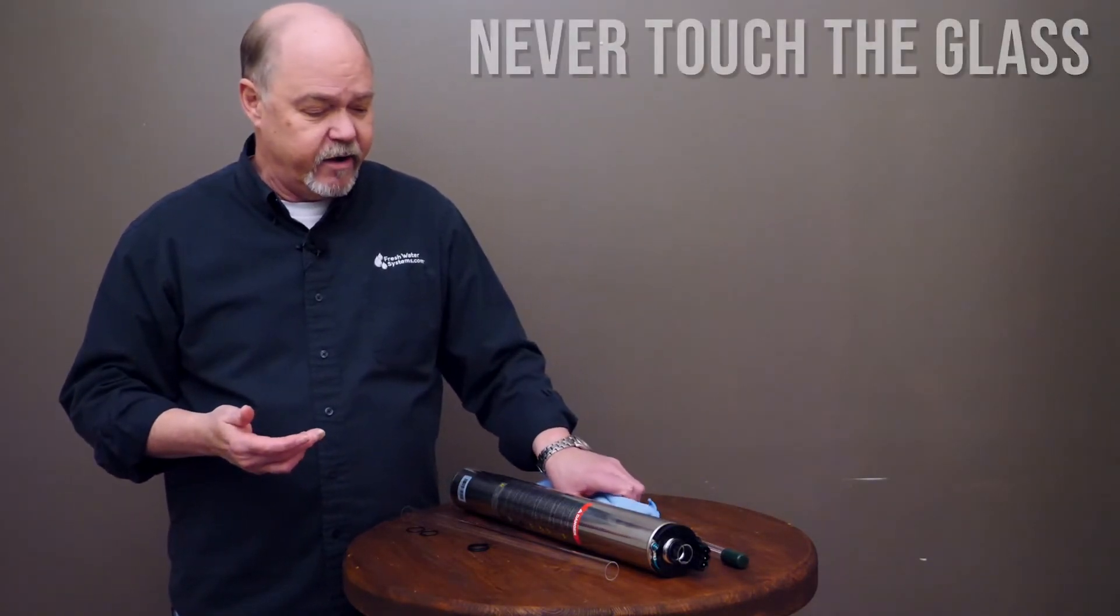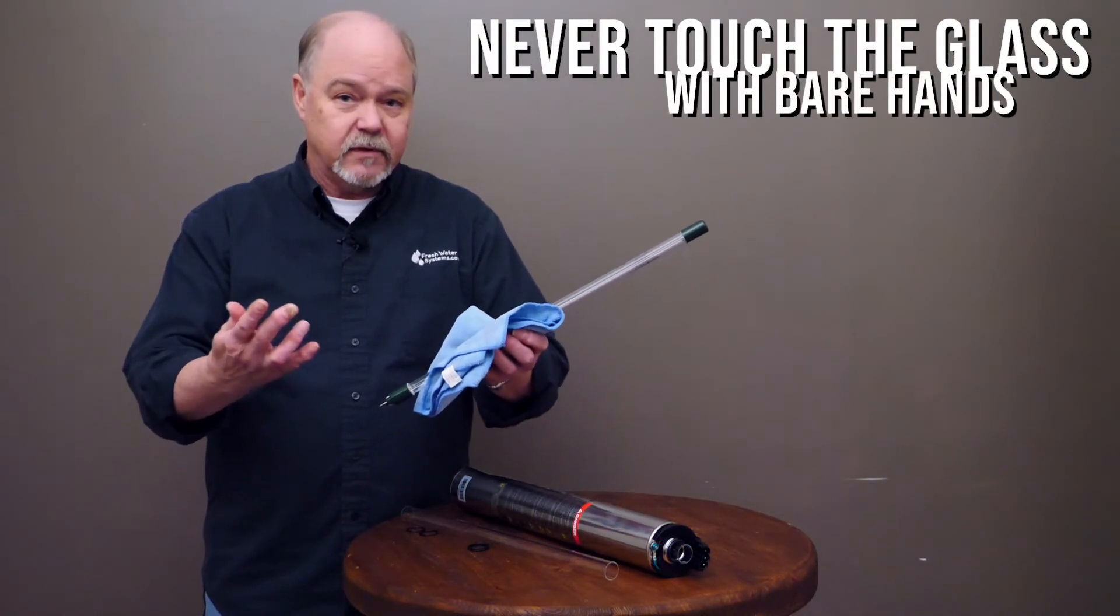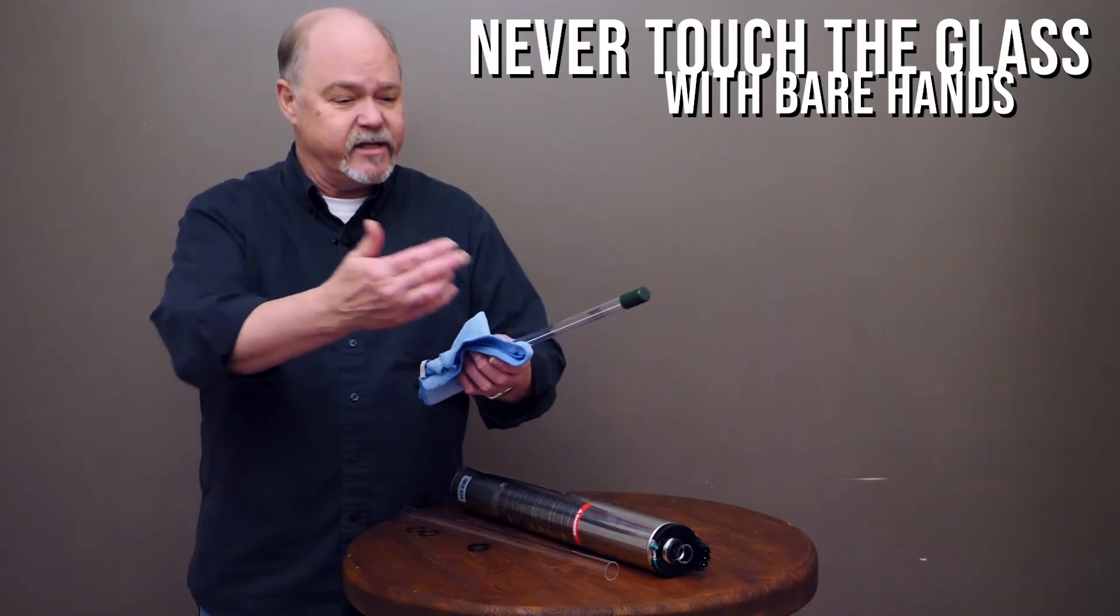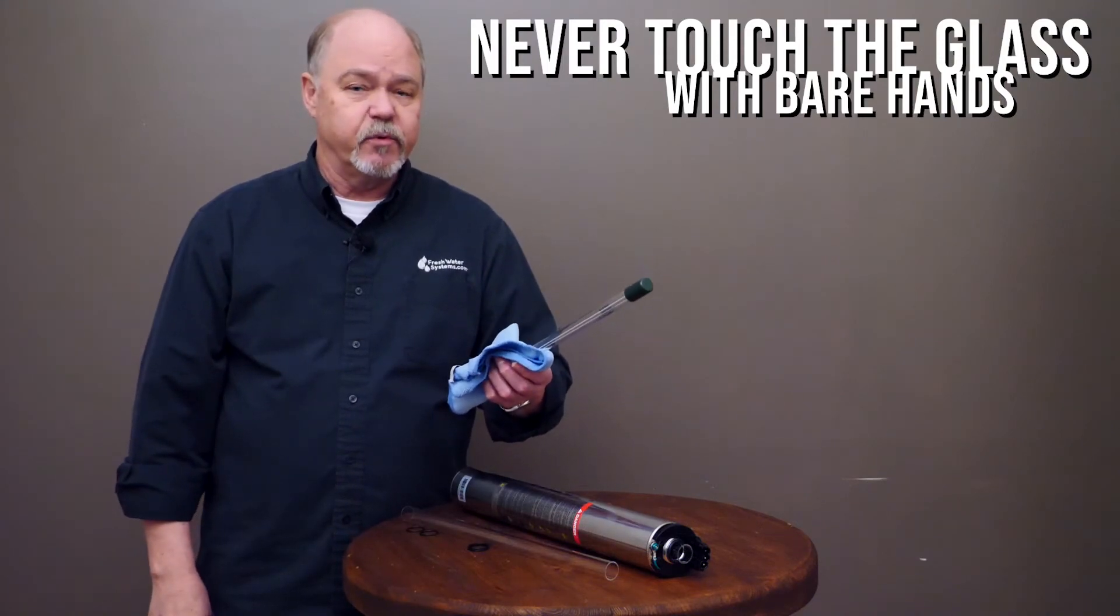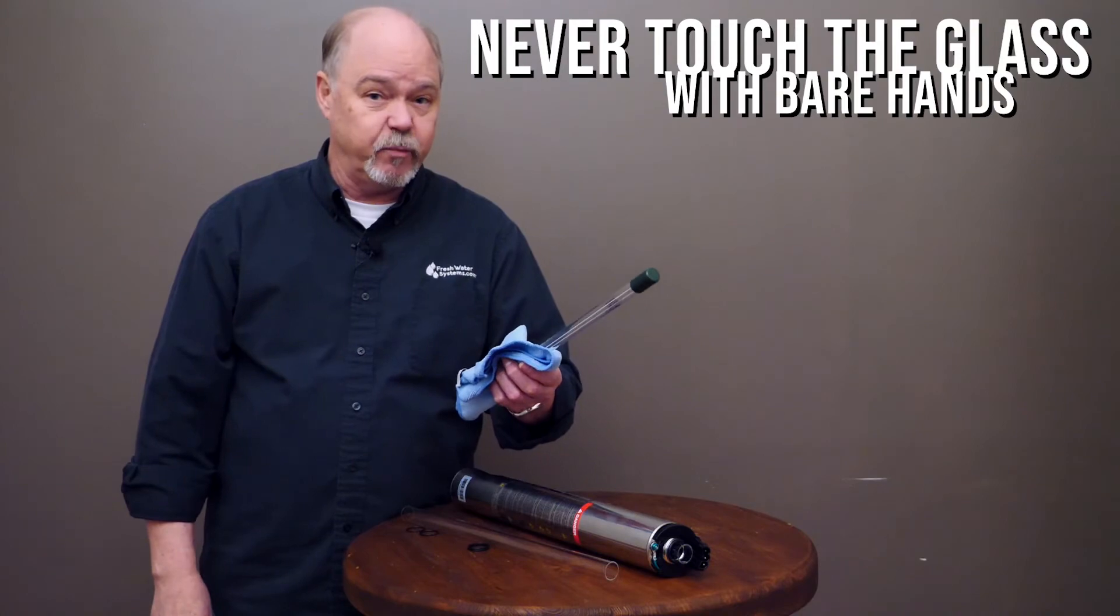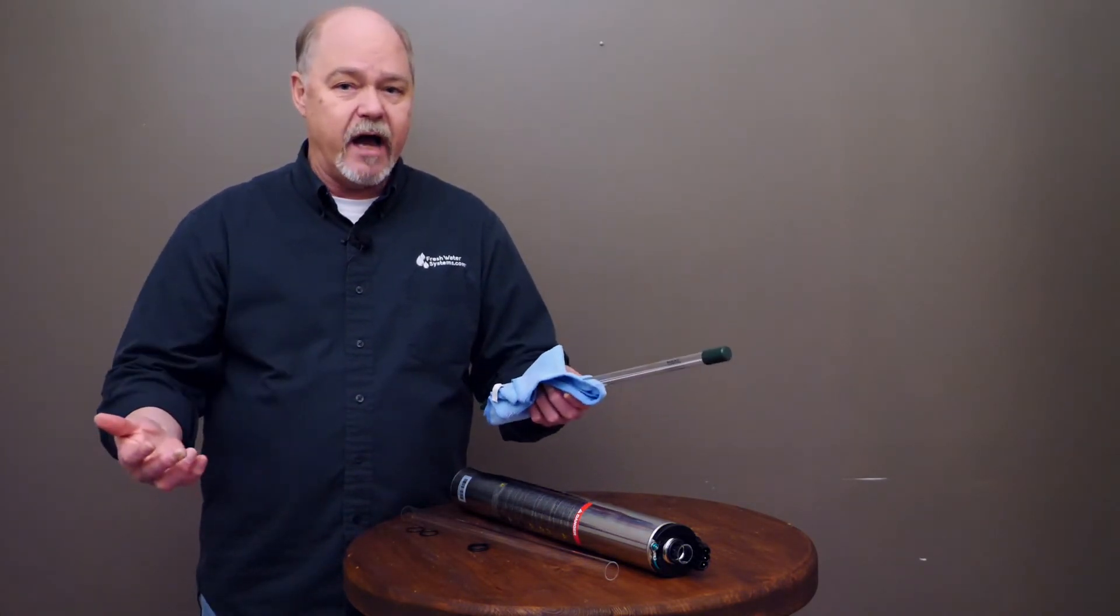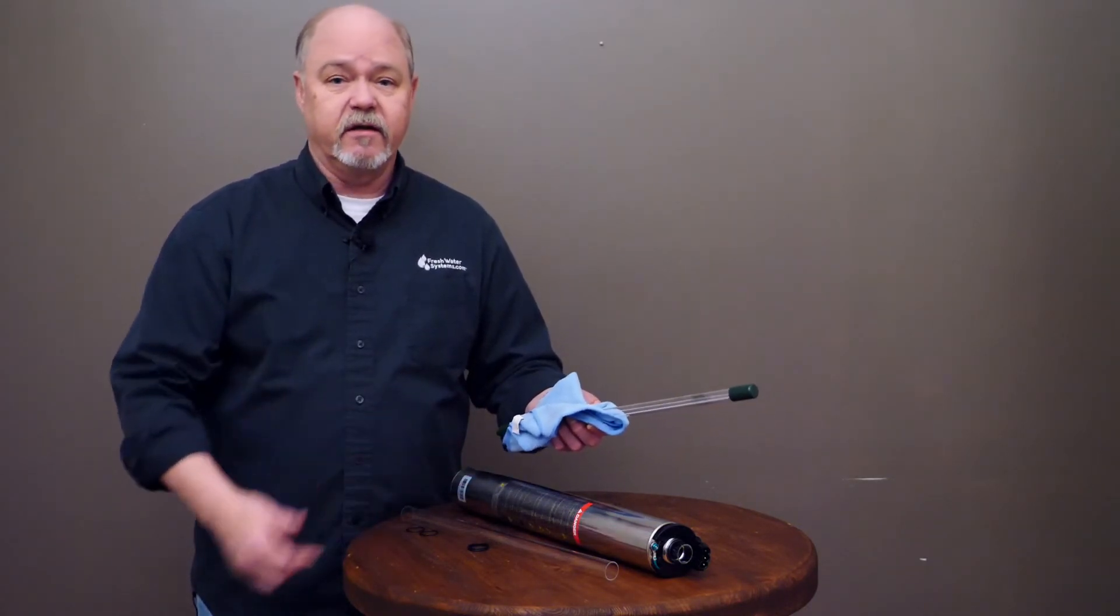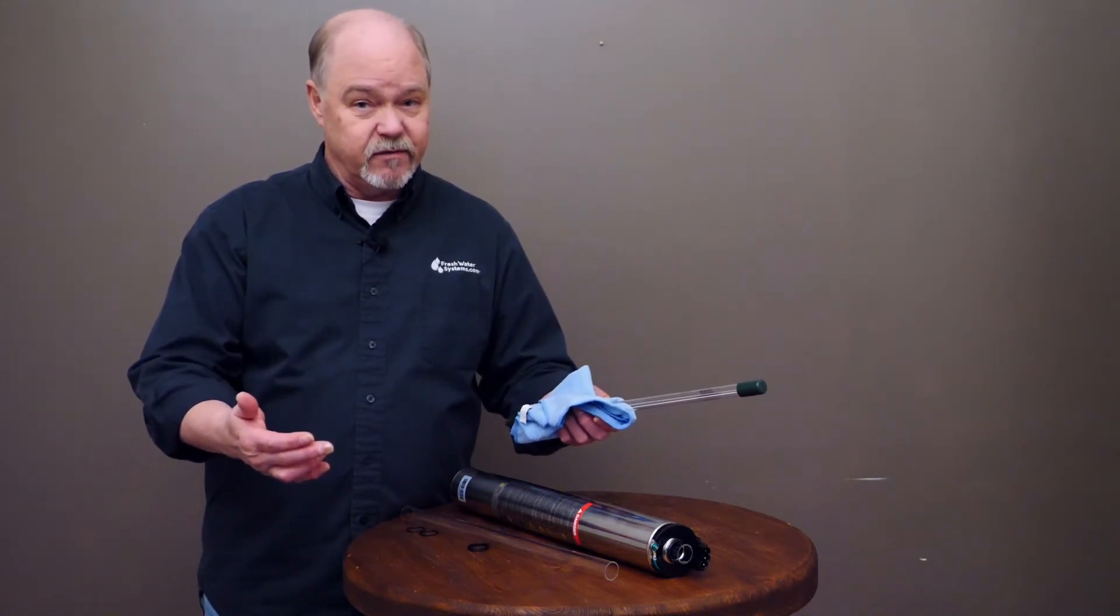Next, never touch the glass with your fingers. Either wear a latex glove or use a cloth to hold it with. Anytime you touch the glass on the lamp it's going to affect its performance. In fact, you can ruin that 9,000 hour lifespan. Quartz glass sleeve if you touch it, you're going to block UVT and you're diminishing the effectiveness of your system. You want to get what you paid for and that's good disinfection.